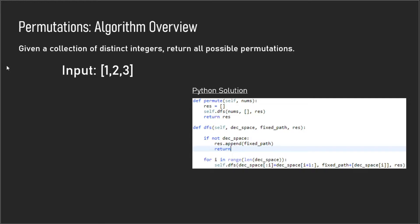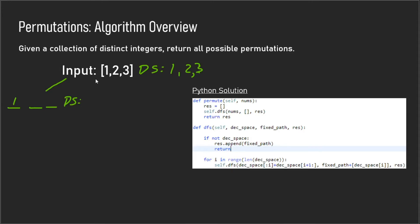The way we want to approach this problem is by using recursive backtracking and decision spaces. We essentially want to fix one element at a time. Our decision space right now is one, two, and three. For our first index we have three choices: one, two, and three. Let's choose one and fix it at the first index — keep in mind there will also be branches with two and three fixed at the first index. Our decision space is now only two and three.